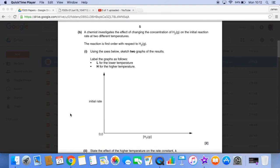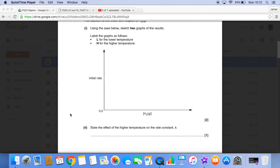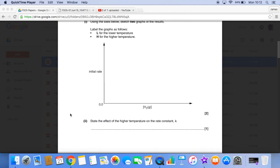Part B. The chemist investigates the effect of changing the concentration on the initial reaction rate at two different temperatures. We're told that the reaction is first order with respect to hydrogen and we have to draw two graphs of the results. L is at the lower temperature, H is at the higher temperature. And then the final part of this section, state the effect of the higher temperature on the rate constant.